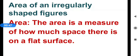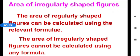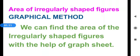So, what is the area? The area is a measure of how much space there is on a flat surface. The area of regularly shaped figures can be calculated using the relevant formulae. But the area of irregularly shaped figures cannot be calculated using any formulae. How can we find the area of these irregularly shaped objects?